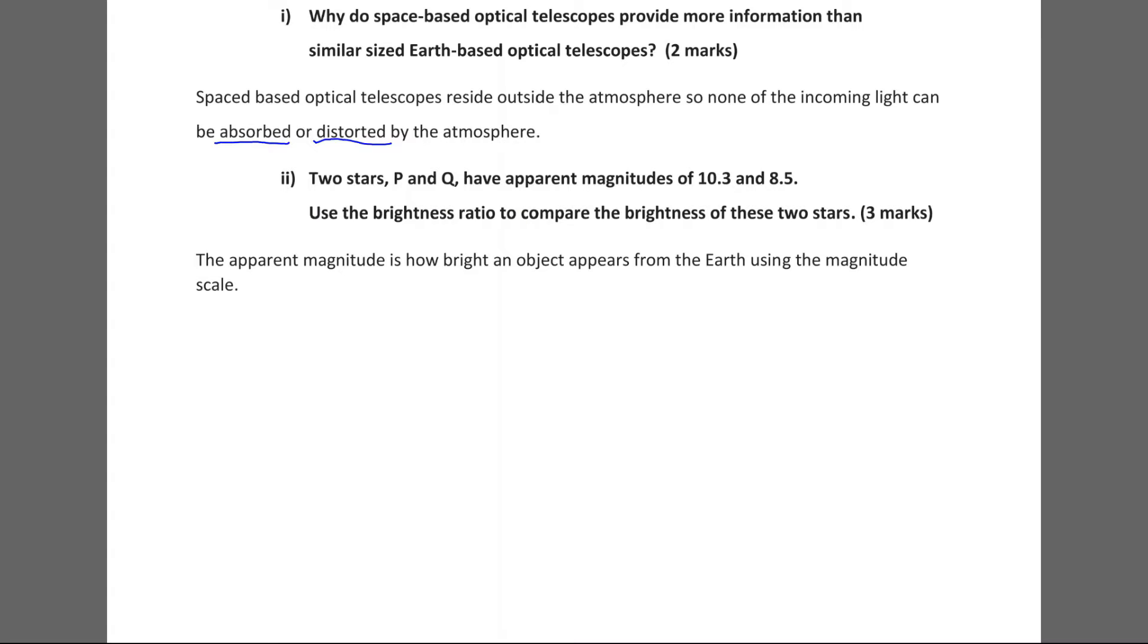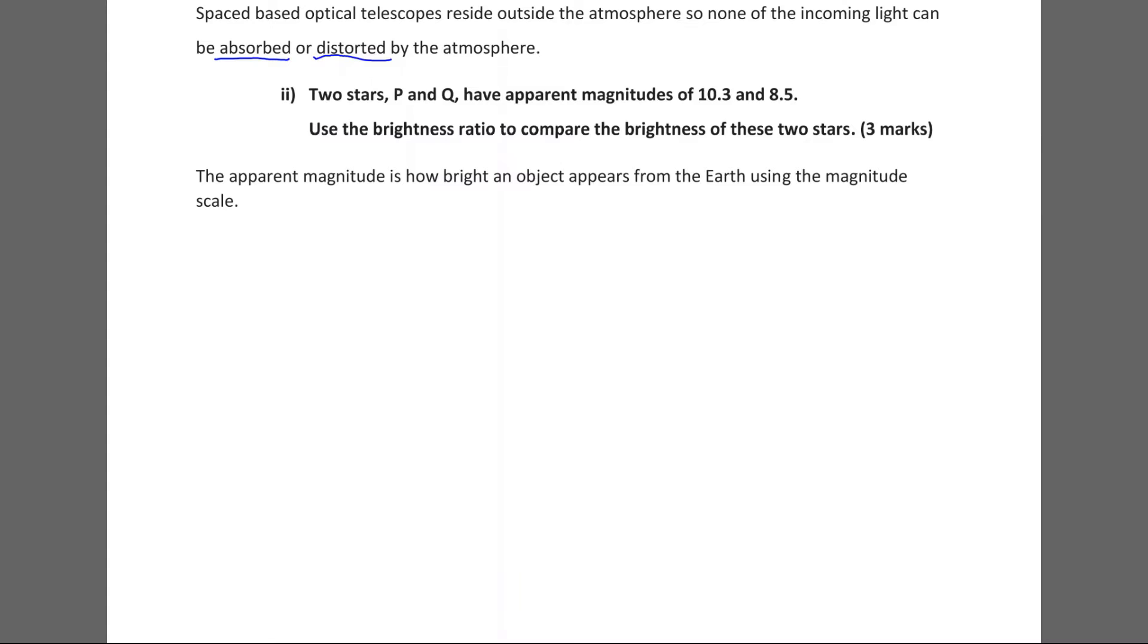But there is a fair bit of assumed knowledge in these questions. I won't go into too much depth from them, I'll just talk about how to answer the question. So we need to use the brightness ratio to compare the brightness of these two stars. Now that equation looks like this. If I want to compare the brightness of two stars, A and B, it would look like this: IA divided by IB, and that's the intensity of the two, equals 100 to the power of mB minus mA divided by 5. That's the equation I need to use, where mB and mA are the apparent magnitudes of the stars.